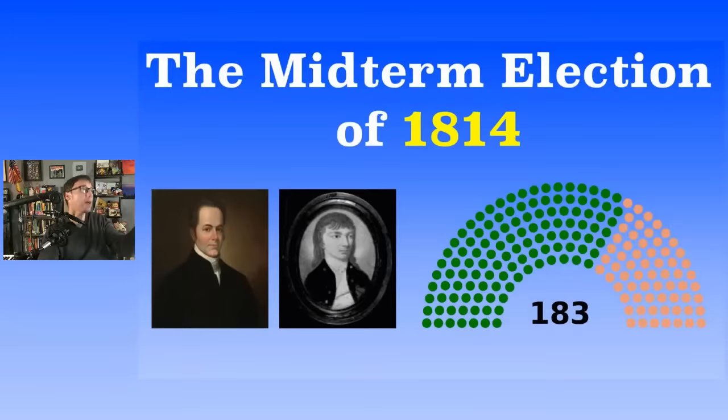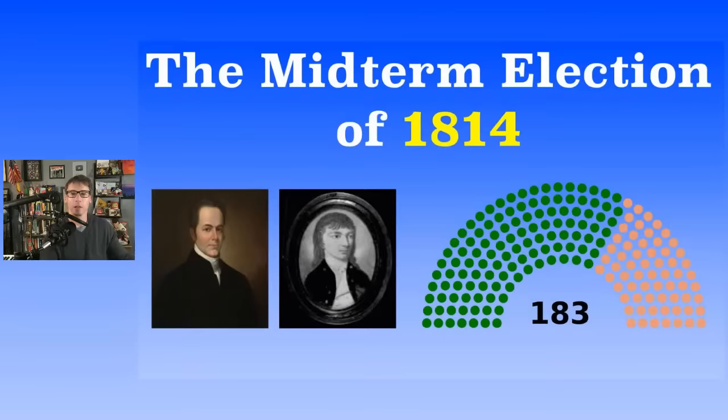The Era of Good Feelings — James Monroe gets elected in 1816, and we are still fairly unified as a country. Rufus King didn't stand a chance against him. So we're jumping ahead to the midterm election of 1818.